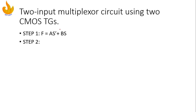Next, let us design a two-input multiplexer circuit using two CMOS transmission gates. A useful trick to design any circuit is to first focus on the expression. The expression for a multiplexer is F = A·S̄ + B·S. We take one transmission gate for the A·S̄ term and another transmission gate for the B·S term.